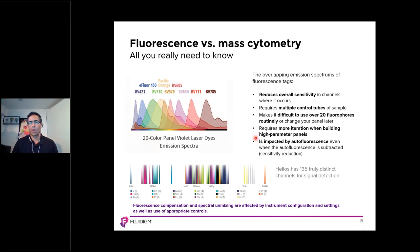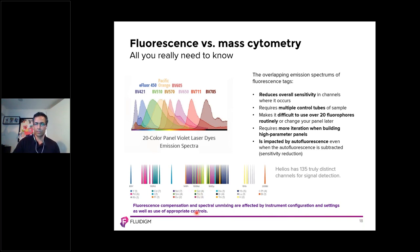In addition, compensation and spectrum unmixing is affected by instrument configuration, settings, as well as the use of appropriate single-stain controls. In contrast, Helios has 135 truly distinct channels for signal detection, which makes high-parameter panel design quite easy compared to flow cytometry. Assay-specific optimization and compensation are not needed in mass cytometry.